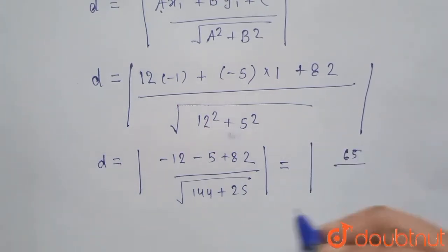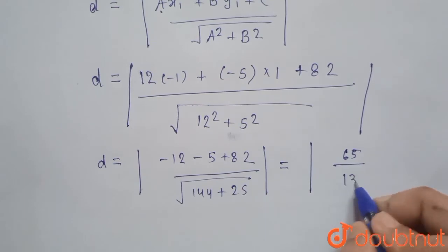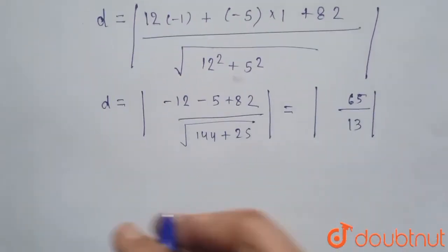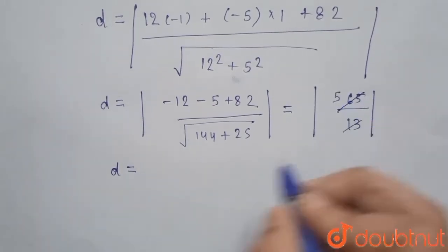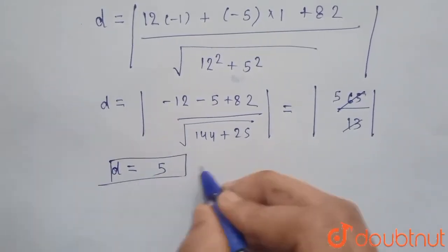Equals to we get 65 upon under root 169, that is 13. So here our d is equal to 65 by 13, so d is equal to 5. This is our answer.